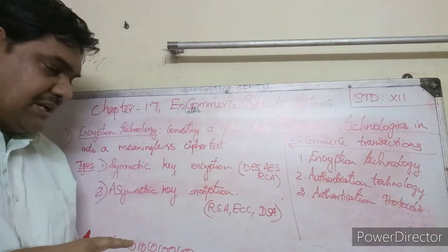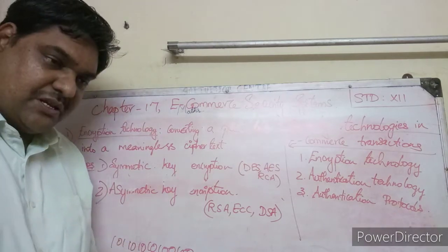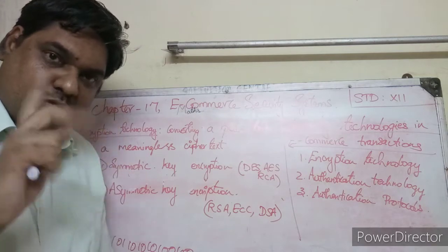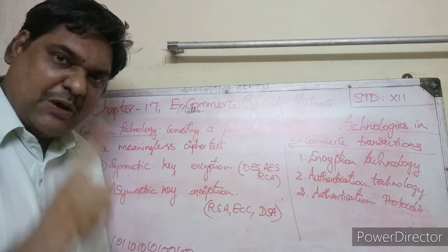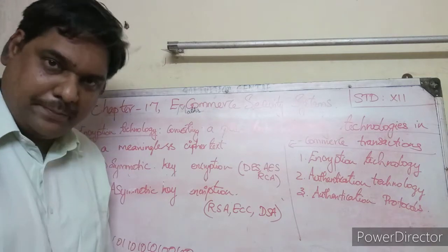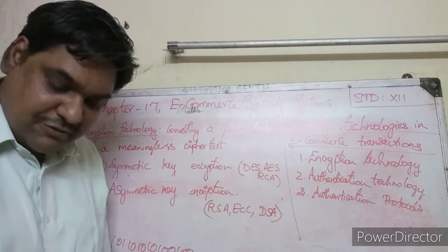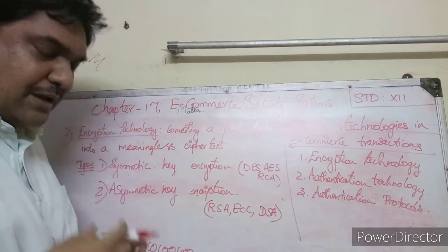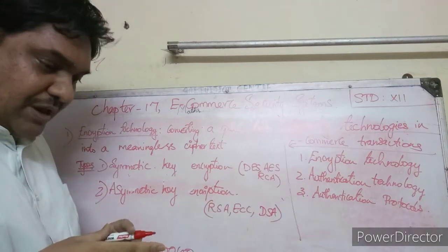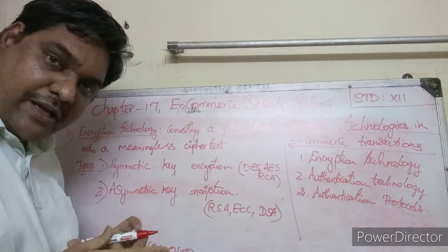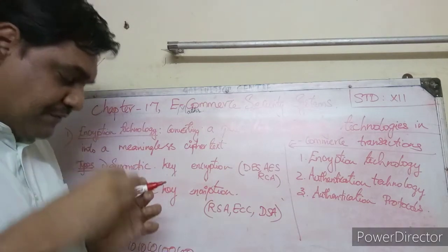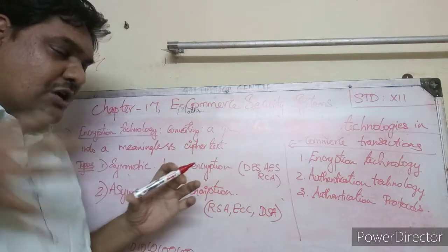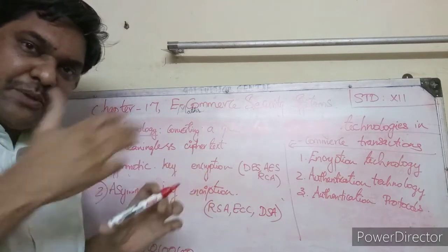In asymmetric key encryption, the latest approach uses two keys: a public key and a private key. One key encrypts the information, and the other decrypts it.